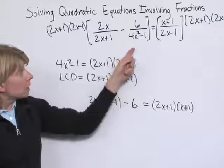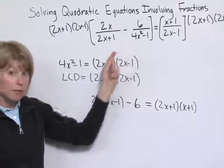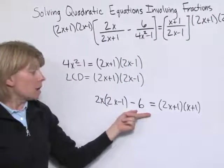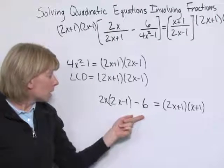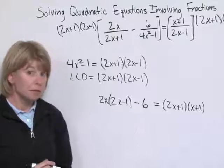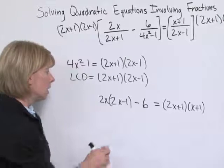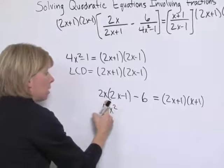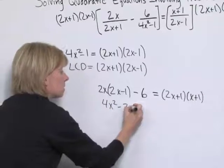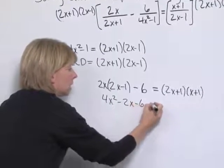And now we've taken our original equation containing fractions, and we now have an equivalent equation without fractions. And this will be easier to solve. We first need to get rid of the parentheses. Here we distribute the 2x, get 4x squared minus 2x minus 6.